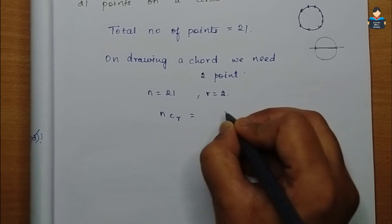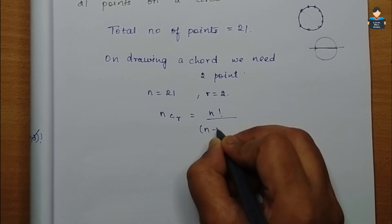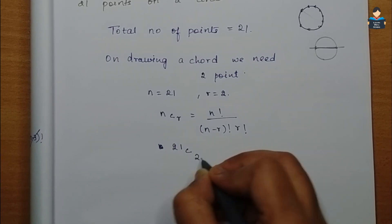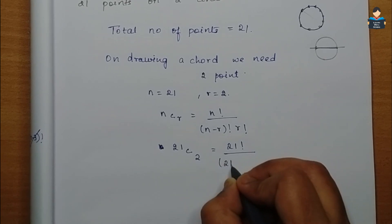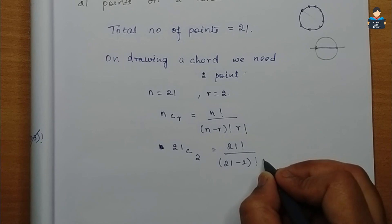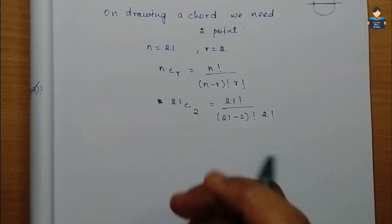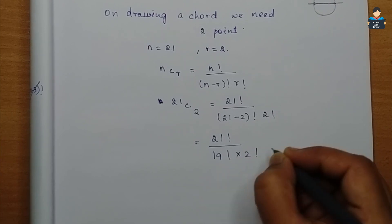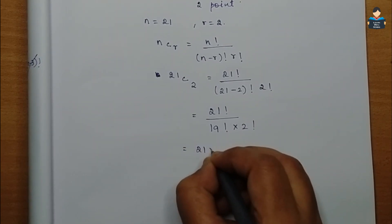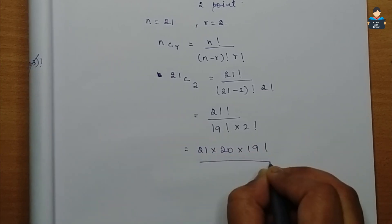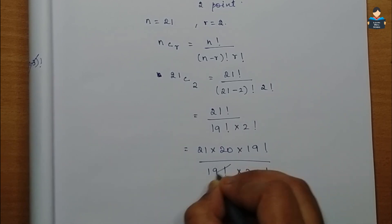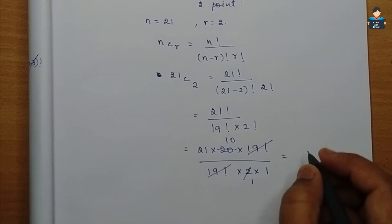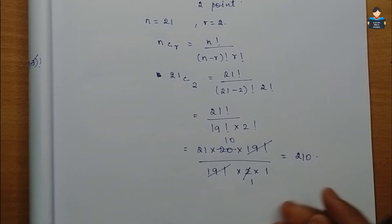nCr is equal to n factorial by (n minus r) factorial into r factorial. So 21C2 equals 21 factorial by (21 minus 2) factorial into 2 factorial. Expanding: 21 into 20 into 19 factorial by 19 factorial into 2 into 1. The 19 factorials cancel, giving 21 into 20 divided by 2, which equals 210.